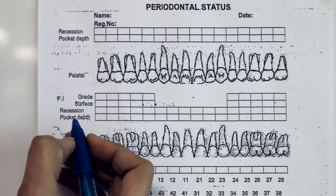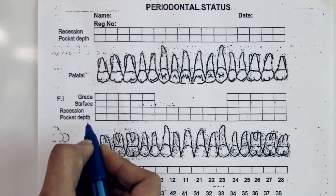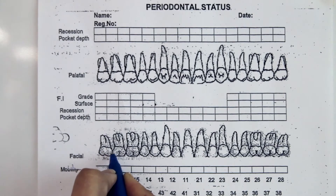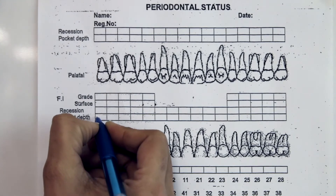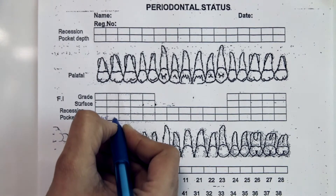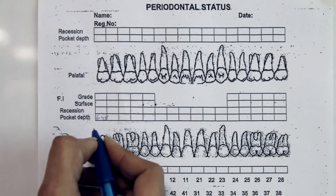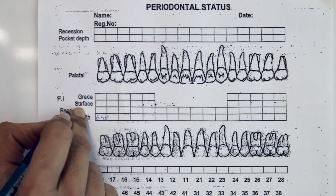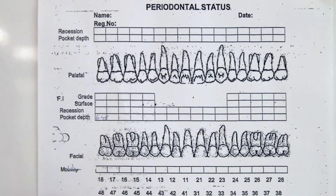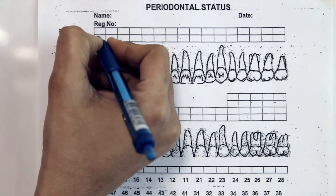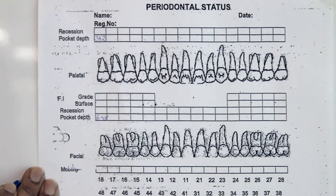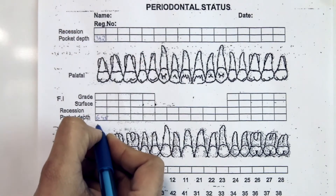For pocket depth or recession, we record on six sites per tooth: mesio-buccal, mid-buccal, and disto-buccal for the buccal surface. For example, if the patient has a pocket of 6, 4, and 5 on tooth 18, you write those values in the corresponding boxes. Once you finish entering all teeth on the buccal surface, you then record probing on the palatal surface. On the same tooth, if the patient has less pocketing palatally, they may have values like 3, 4, and 2 — giving you a total of six recordings per tooth.